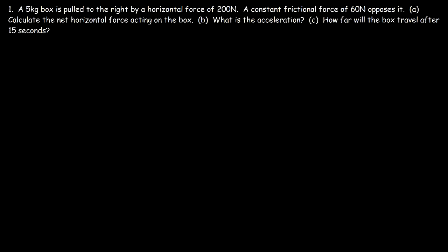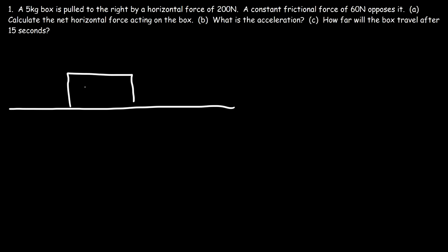A 5 kilogram box is pulled to the right by a horizontal force of 200 newtons. A constant frictional force of 60 newtons opposes it. Part A: calculate the net horizontal force acting on the box. So let's draw a picture. The 5 kilogram box is being pulled to the right by a 200 newton force.